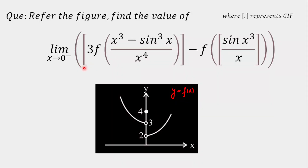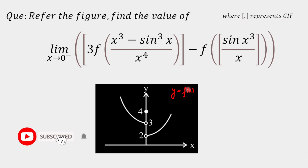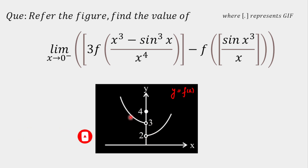Today we are going to solve a limit question. The limit is as x approaches 0 from the left (0 negative). We need to calculate the value of the function. The big brackets represent the GIF, that is the greatest integer function. Additional information given is that the graph of y = f(x) is provided, and we have to refer to the graph in order to calculate the value of this limit.